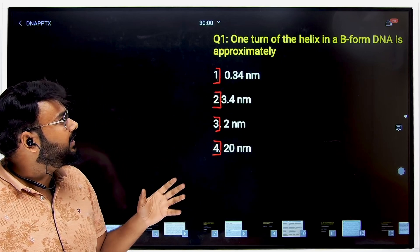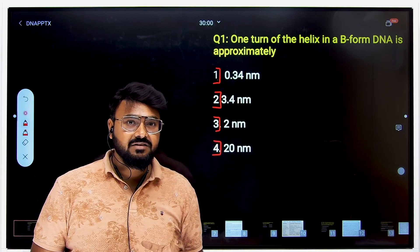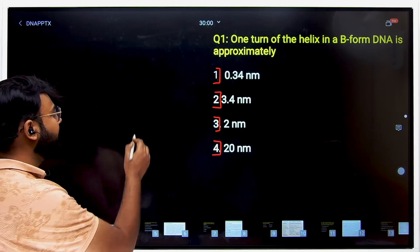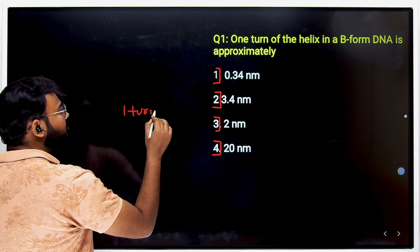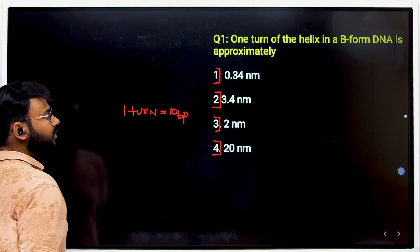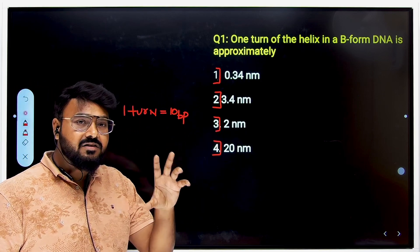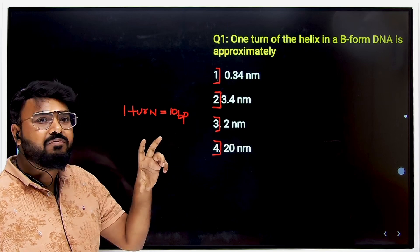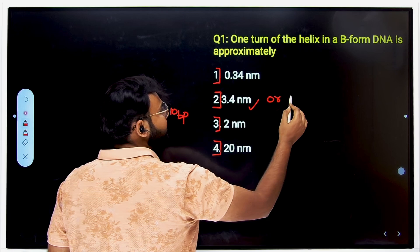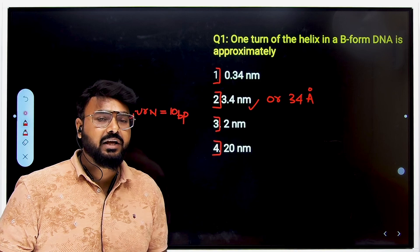The first question: one turn of the helix in B-form DNA is approximately what? This is asking about the pitch of the DNA. In one turn, or the pitch of the DNA, there are 10 base pairs. The length of one complete turn is 3.4 nanometers, or 34 angstroms. That is why option B is the correct answer.